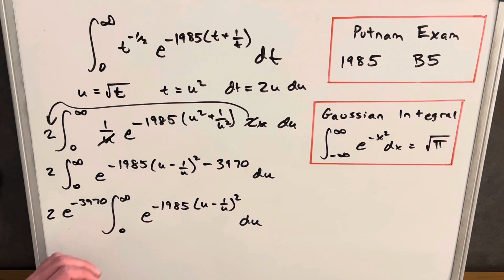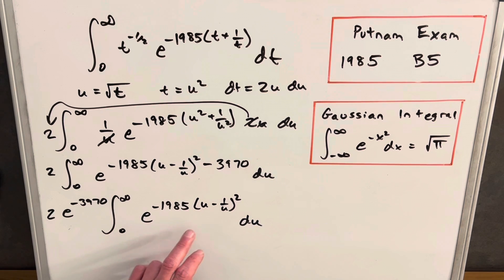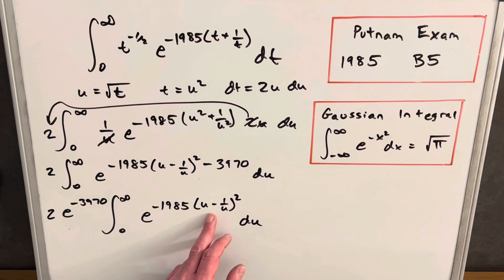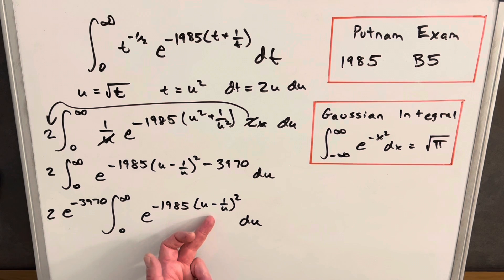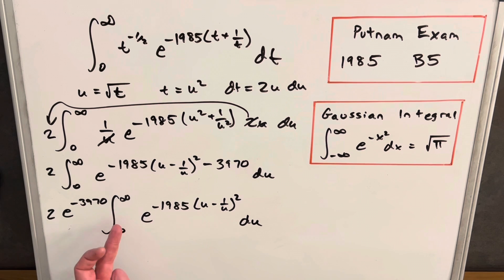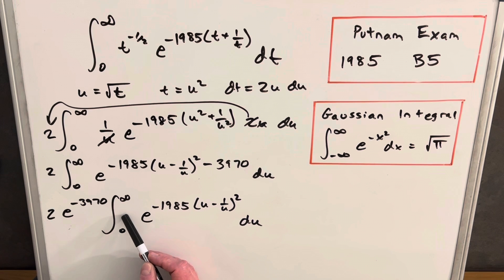At this point we have the integral simplified. It kind of looks like the Gaussian integral, but the problem is we don't just have a u — we have (u minus 1/u) squared. So we need another substitution. If we set v equal to (u minus 1/u), the derivative would be 1 plus 1/u squared. I need to create that factor of 1 plus 1/u squared in front.